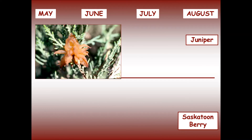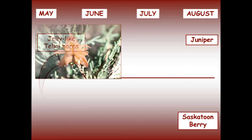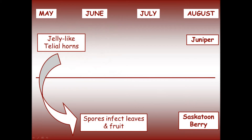The seasonal life cycle of Saskatoon berry juniper rust starts on the juniper. Orange jelly-like telial horns show up in May or June, producing spores which are blown to Saskatoon berries, infecting leaves and berries.